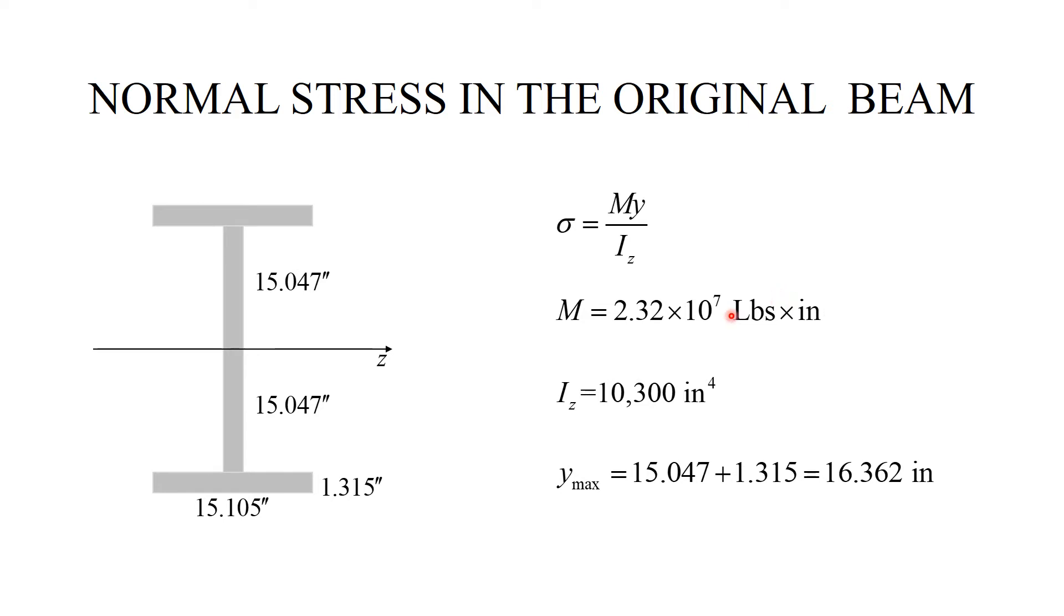Let us begin with analyzing the normal stress in the original beam. The standard formula. The moment comes from the previous slide. The moment of inertia comes from the table. And the maximum Y is very easy to calculate by looking at this picture. It's simply the sum of these two distances. As a result, we obtain that the maximum stress in this beam is 37,000 KSI. This is pretty much in line with what the yield stress of structural steels are. It's in a good ballpark.